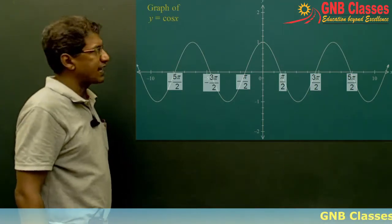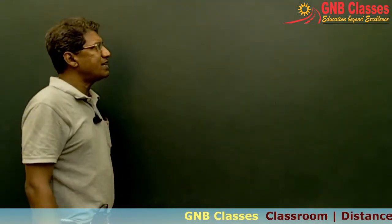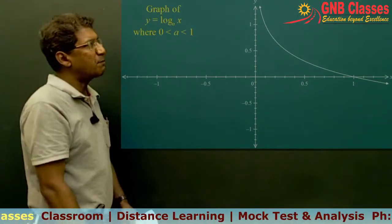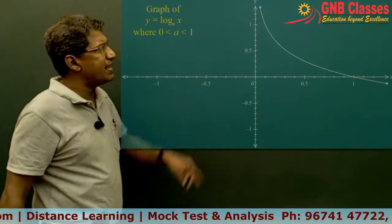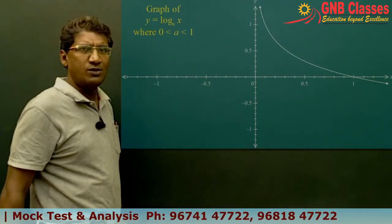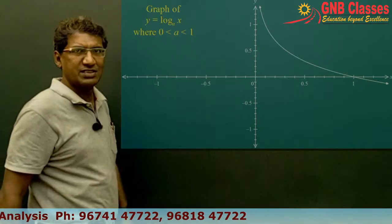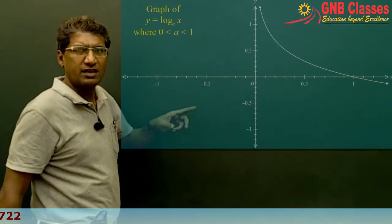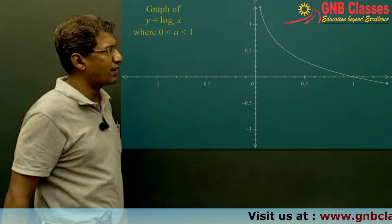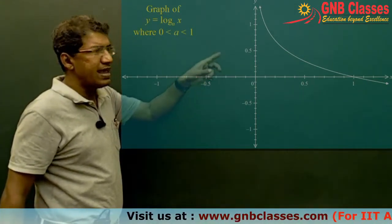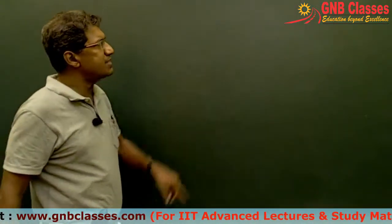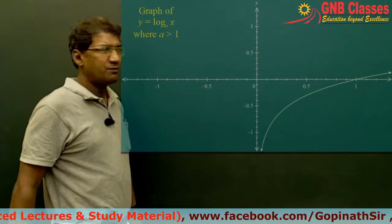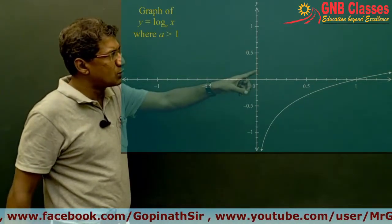The next graph is y = log_a(x). When a is between 0 and 1, the curve looks like a decreasing shape — and you can see the y-axis is an asymptote to this curve. When a is greater than 1, the curve is increasing, and again the y-axis is the asymptote.